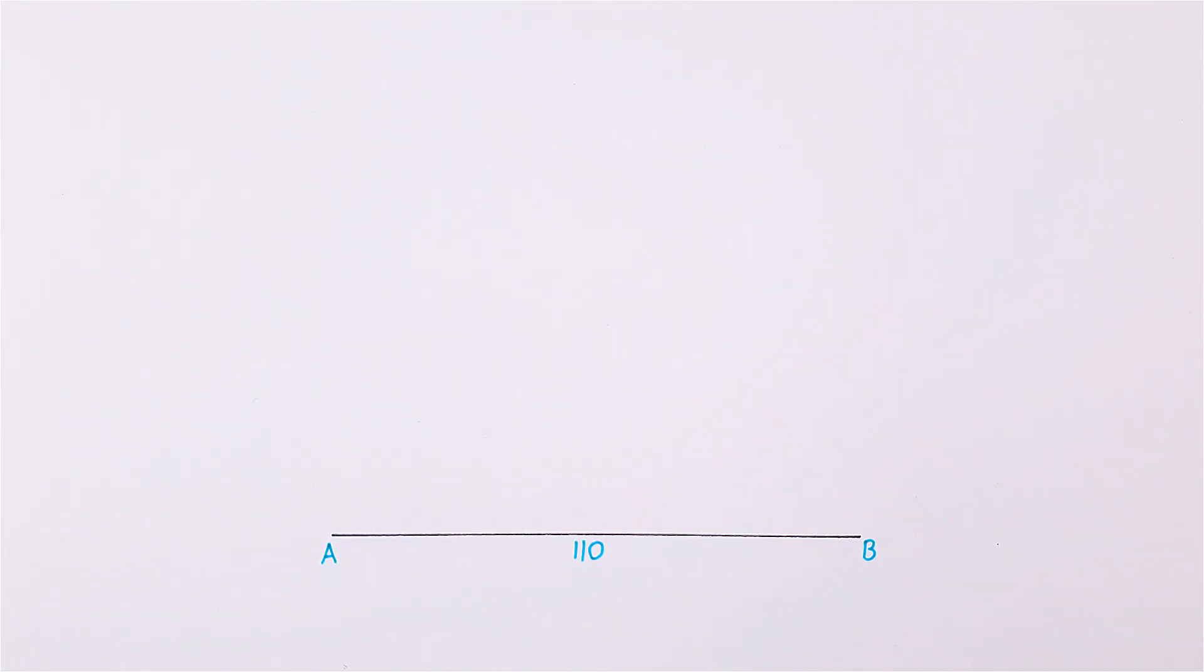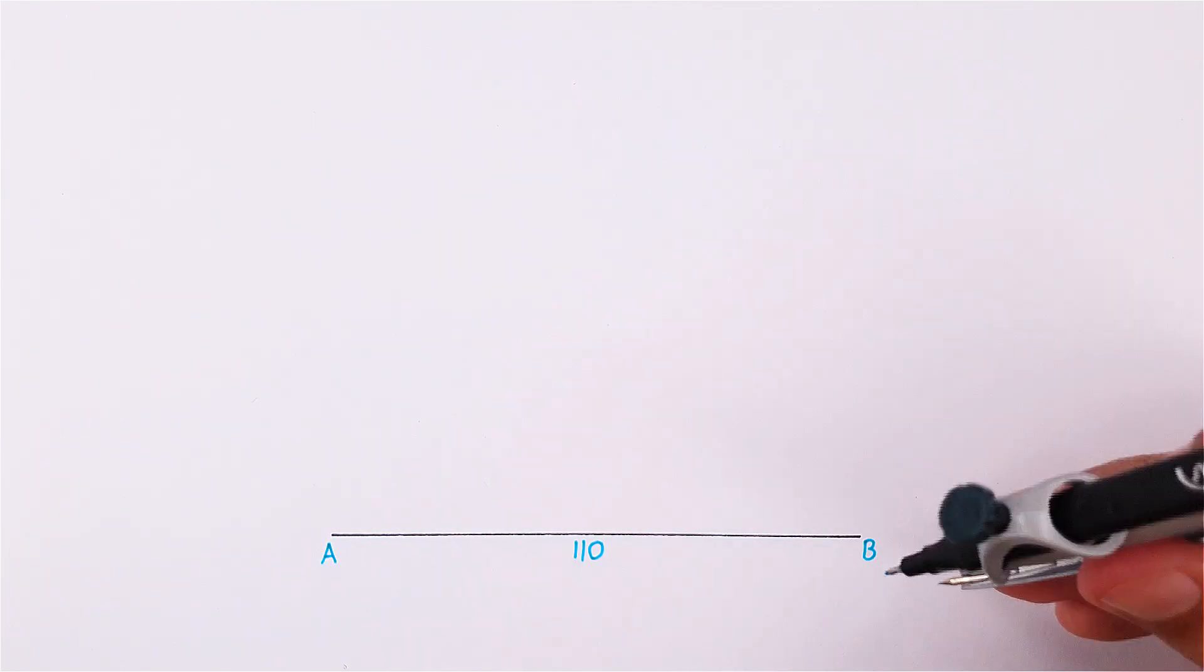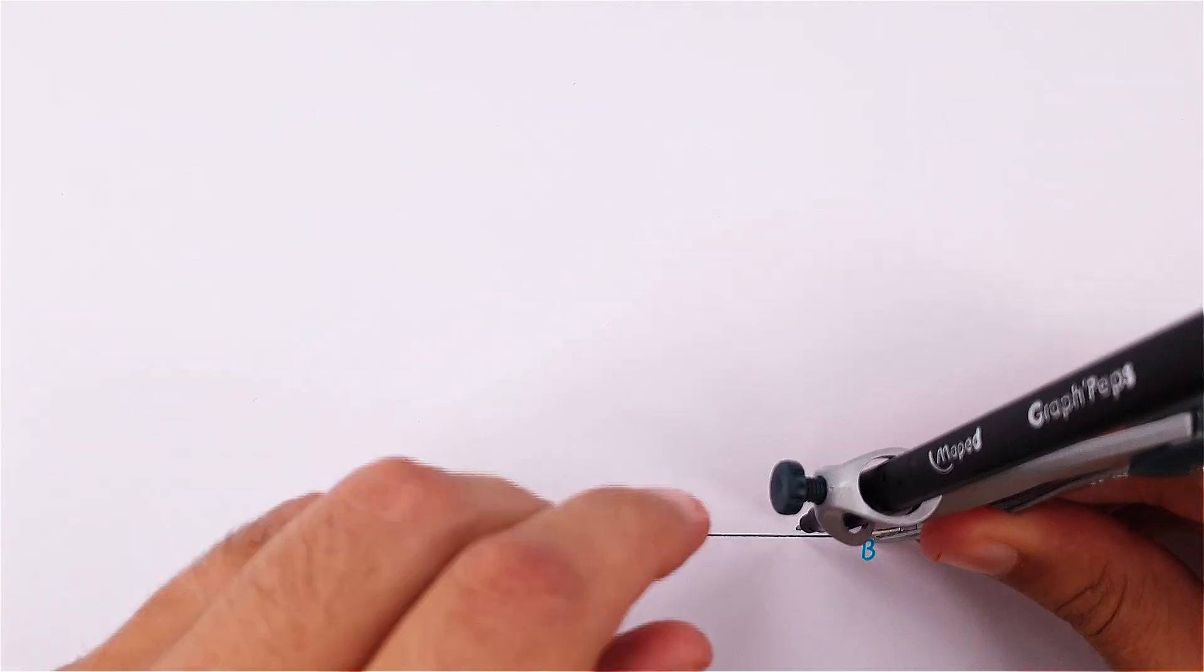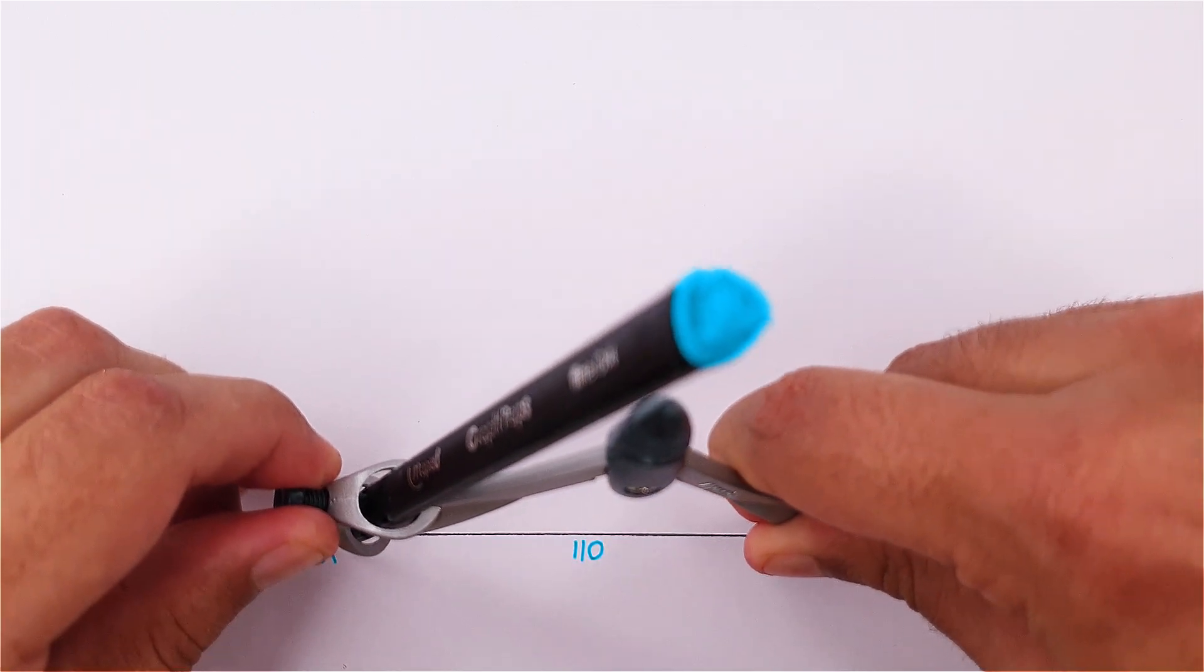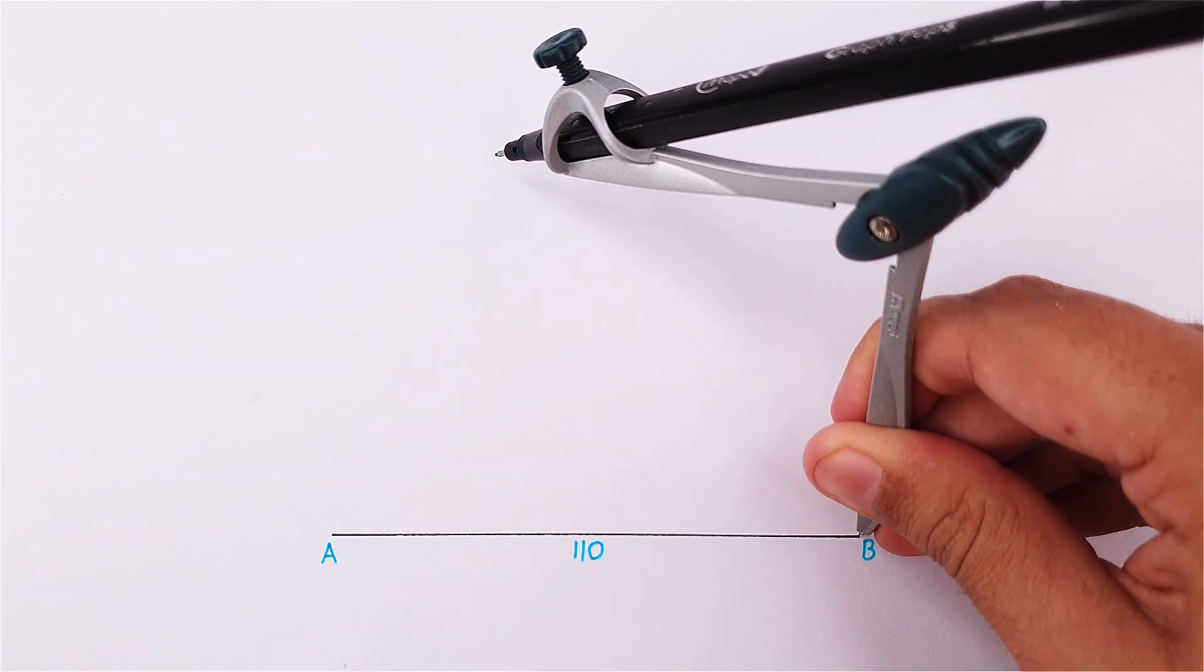In this video we will draw an inscribed circle in an equilateral triangle. Start by constructing an equilateral triangle with the side length of a hundred and ten millimeters.